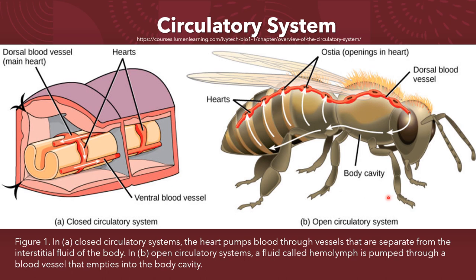In an open circulatory system, the blood is not enclosed in the blood vessel, but is pumped into a cavity called the hemocele. It is called the hemolymph because the blood mixes with the interstitial fluid. As the heart beats and the animal moves, the hemolymph circulates around the organs within the body cavity and then re-enters the heart through openings called the ostia. This movement allows for gas and nutrient exchange.